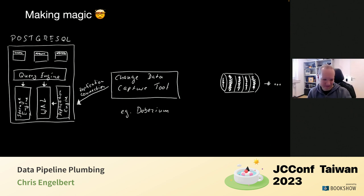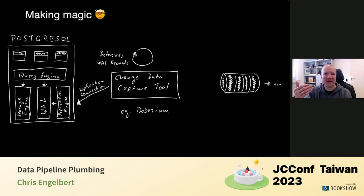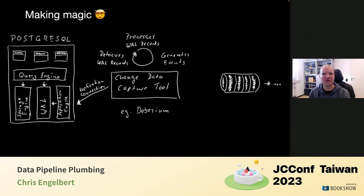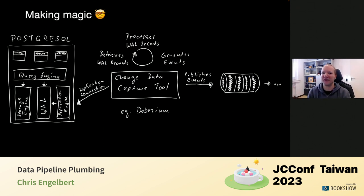The Postgres server sends the individual records — inserts, deletes, updates. The CDC tool processes them, takes the previous and new values, and squeezes them into a JSON, Avro, or Protobuf structure, then sends those generated events to the message queue. We've built ourselves a source. We use the CDC tool as the source in our data pipeline.